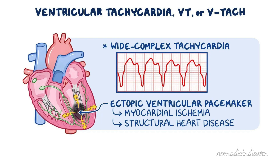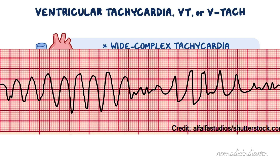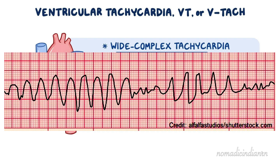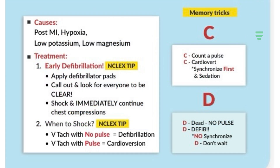Ventricular Tachycardia, also known as V-Tach — the fast and deadly one. Patients going through V-Tach will have bizarre and wide QRS complexes. It will look like tombstones or a row of mountains on the EKG. NCLEX tip: for stable V-Tach where a pulse is present, give amiodarone. For unstable V-Tach where pulse is not present, defibrillate the patient as soon as possible.